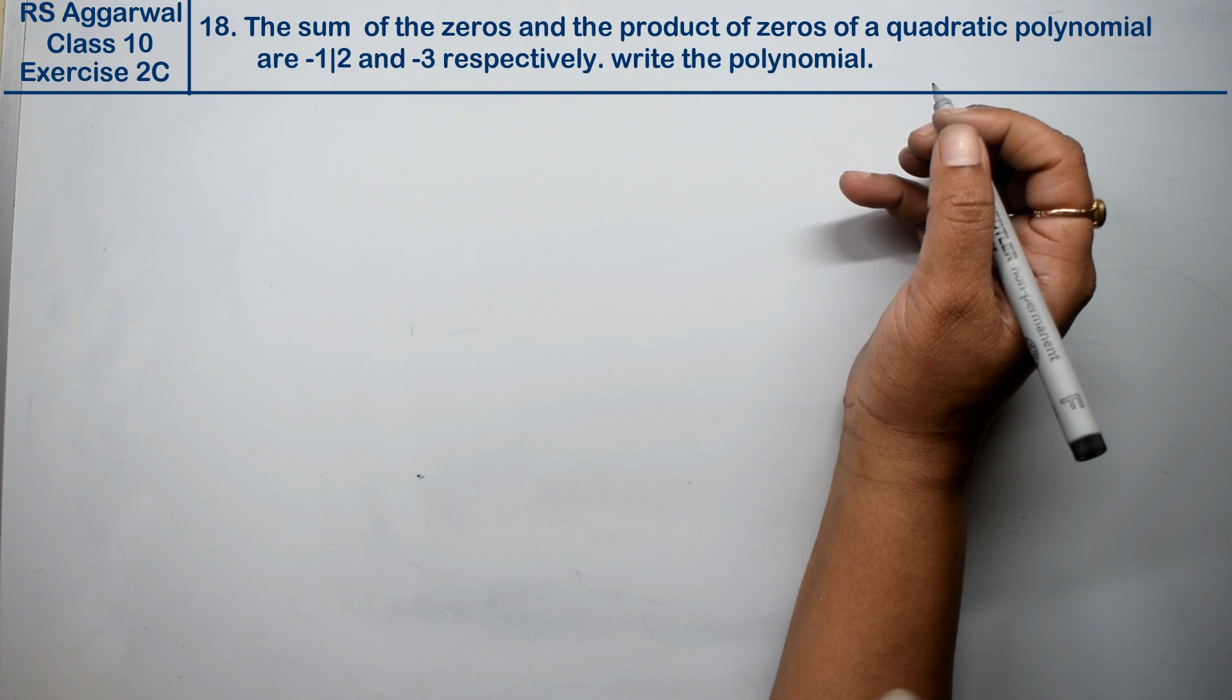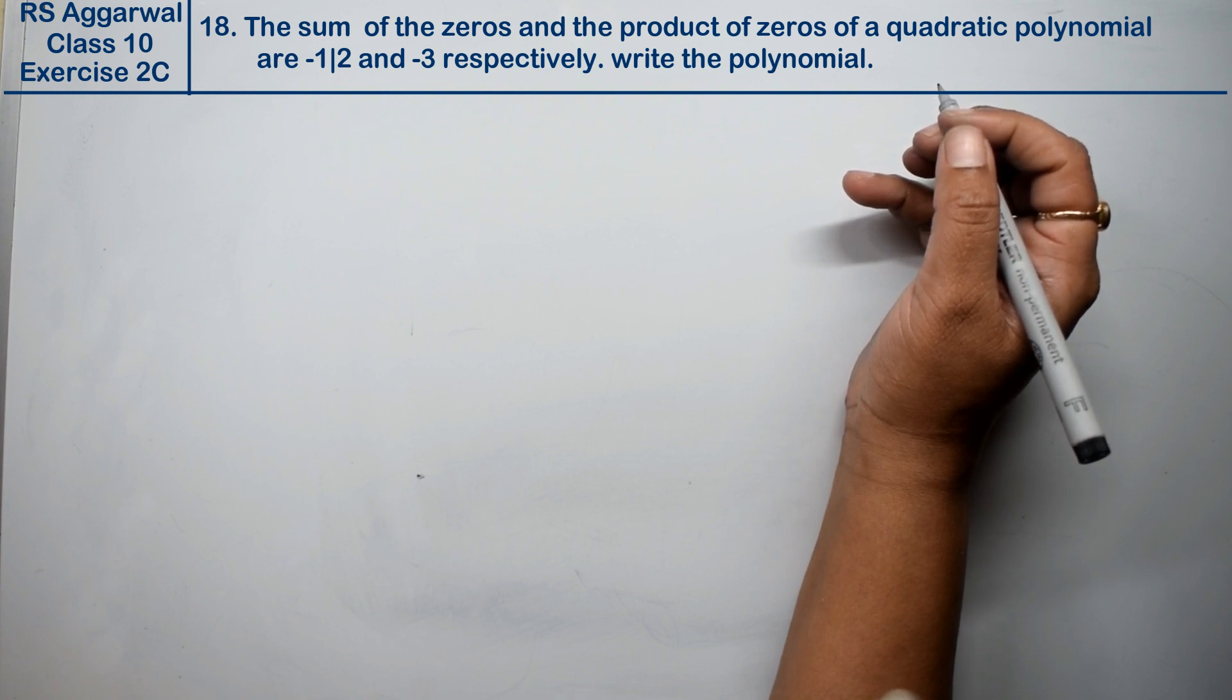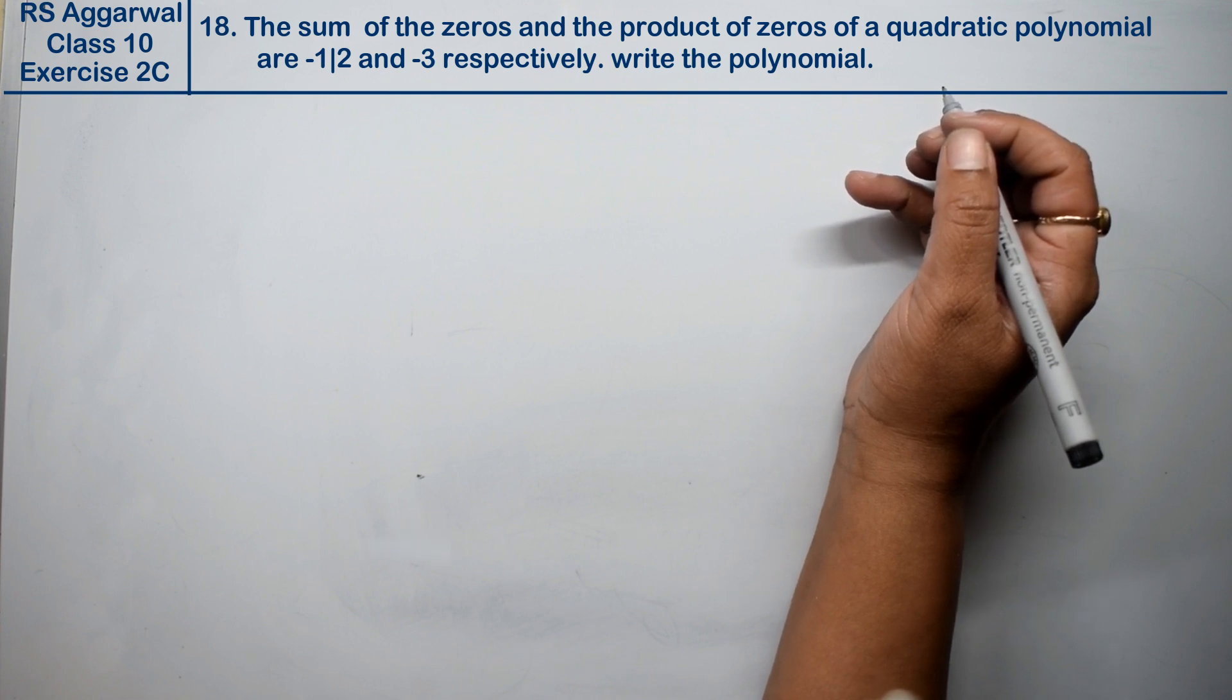Let's do question number 18 of exercise 2C, that is polynomial. Question number 18 is: the sum of the zeros and the product of the zeros of a quadratic polynomial are minus 1 upon 2 and minus 3 respectively. Write the polynomial.